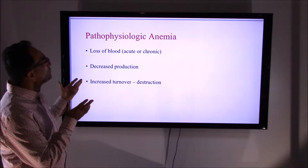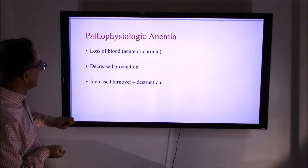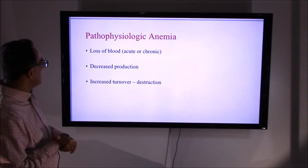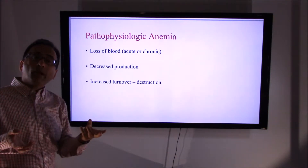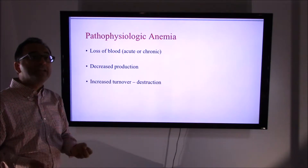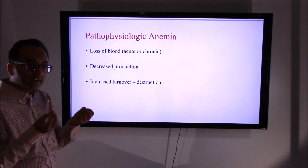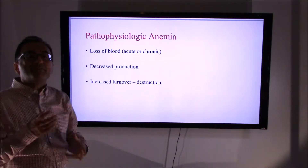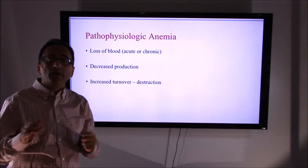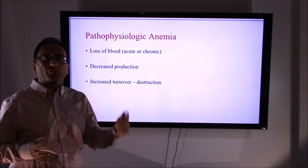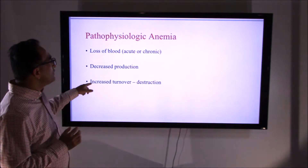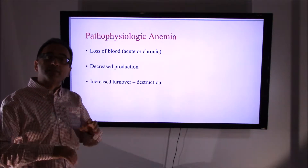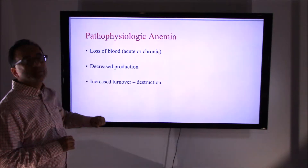Another way to look at anemia is through the pathological approach. Broadly speaking, you can have acute or chronic blood loss leading to anemia. The bone marrow may malfunction and not produce enough red cells or hemoglobin — decreased production leads to anemia. Alternatively, the bone marrow may produce adequate red blood cells, but there is an increased rate of destruction that the bone marrow cannot keep up with, causing anemia.